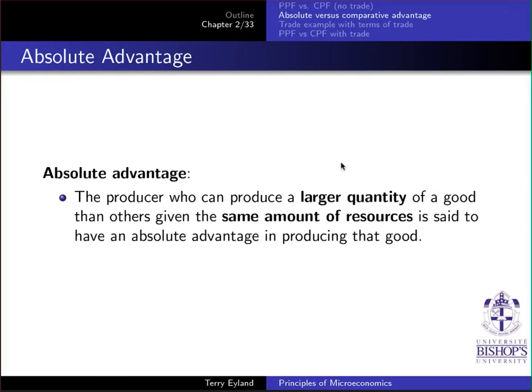We are now at the second section of Chapter 2.3 and we will be looking at Absolute vs. Comparative Advantage. These are two of the key topics in trade theory, very important to understanding the differences between countries and producers. Absolute Advantage is when a producer can produce a larger quantity of a good than others given the same amount of resources.